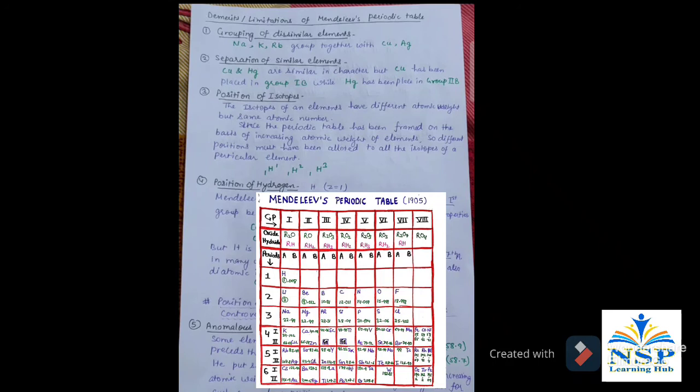Number 2: Separation of similar elements. Copper and Mercury are similar in characters, but Copper has been placed in group first B, while Mercury has been placed in group second B in his periodic table.